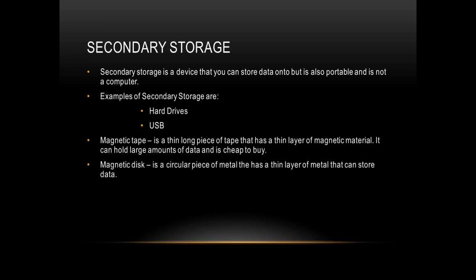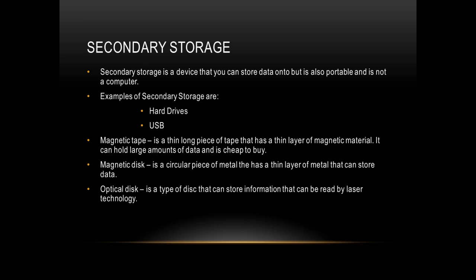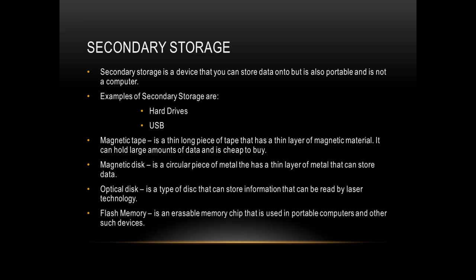Magnetic tape is a thin, long piece of tape that has a thin layer of magnetic material. It can hold large amounts of data and is cheap to buy. Magnetic disk is a circular piece of metal that has a thin layer of metal that can store data.